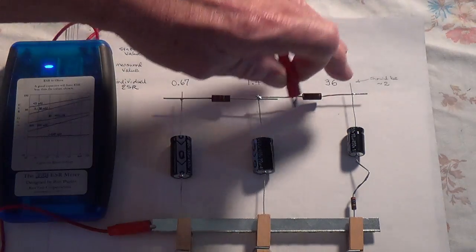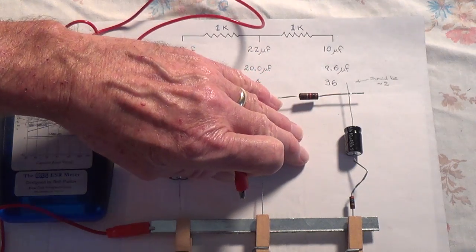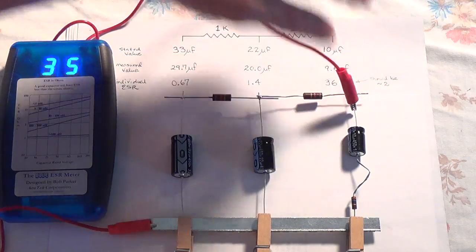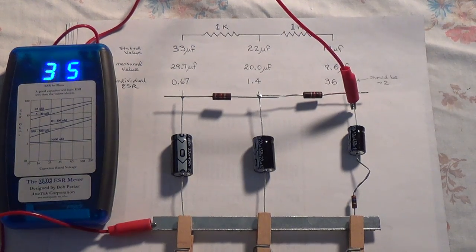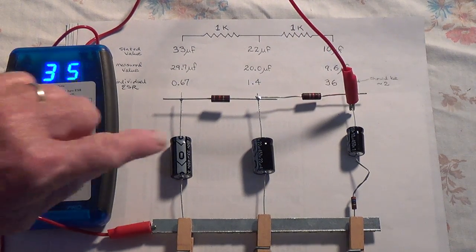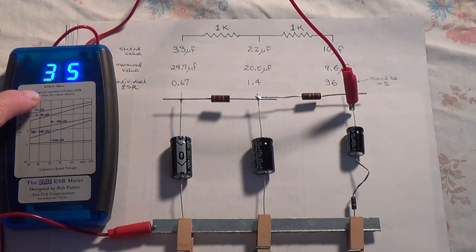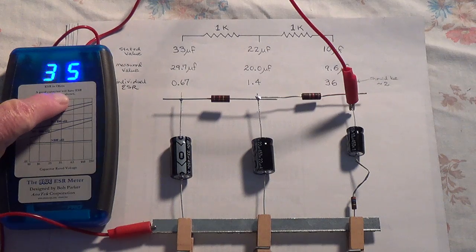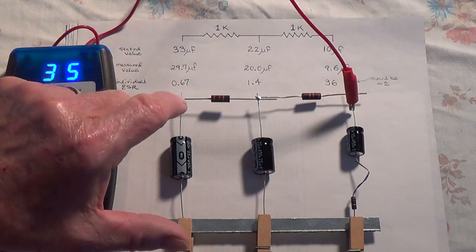And our very faulty final 10 microfarad capacitor which had a reading of 36 now has a reading of 35. And so as you can see, all three filter capacitors gave very good reproducible reliable readings despite being in circuit within the power supply rail.